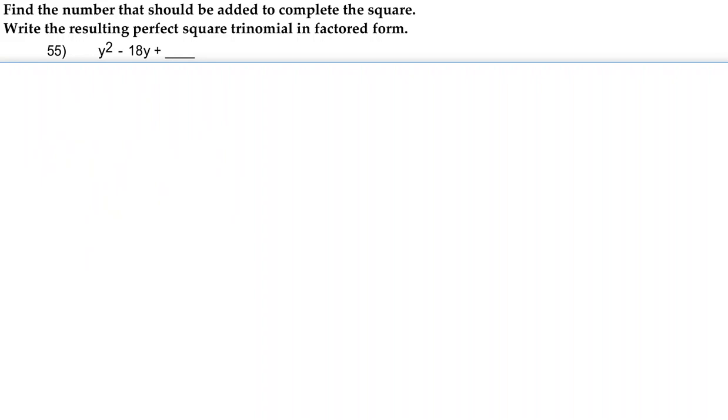Hey guys, so for number 55 we're going to find the number that should be added to complete the square and write the resulting perfect square trinomial in factored form. Here we have y squared minus 18y plus something.